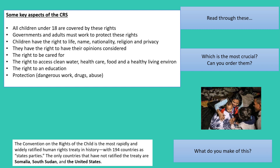It outlines some of the things that children have rights to — I'll allow you to read them — but something I want to point out is that children have the right to be cared for, to have access to clean water and food and healthy environments. They have a right to an education and to be protected from different things. There's a little activity on your screen where you might want to have a go at ordering those from the least crucial to the most crucial principles that you think children need access to in their lives.